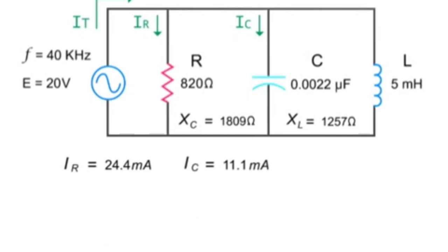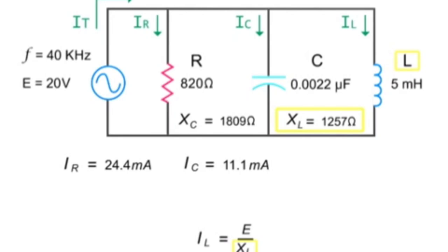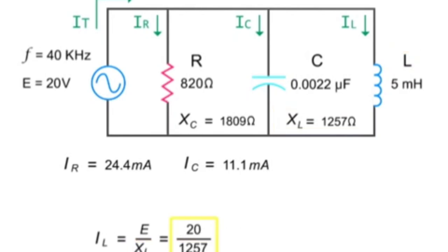To calculate the current through the inductor, divide the source voltage by the inductive reactance, or 20 volts divided by 1,257 ohms, which equals 15.9 milliamps.